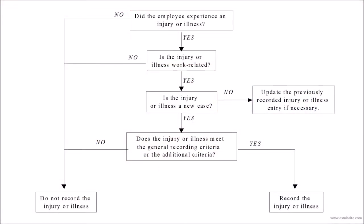Now let's discuss the OSHA 300 reporting process. In this simplified decision tree diagram provided by Cal-OSHA, we can see the process employers can utilize to determine if the injury is recordable on the OSHA Form 300. Starting at the top: did the employee get injured and was it work-related?